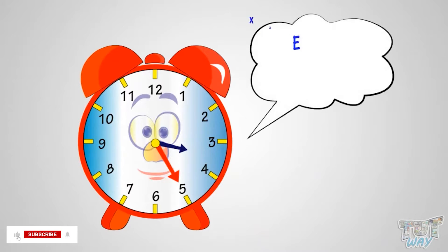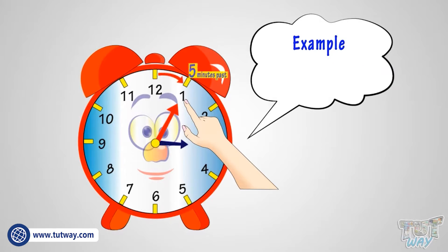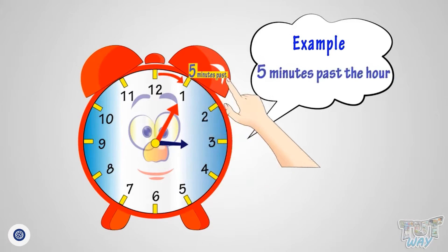See the example. Minute hand is at 1, so count by 5's from 12 to get the minutes. See the figure? It is 5 minutes past the hour. But 5 minutes past which hour? Let's try to figure out.